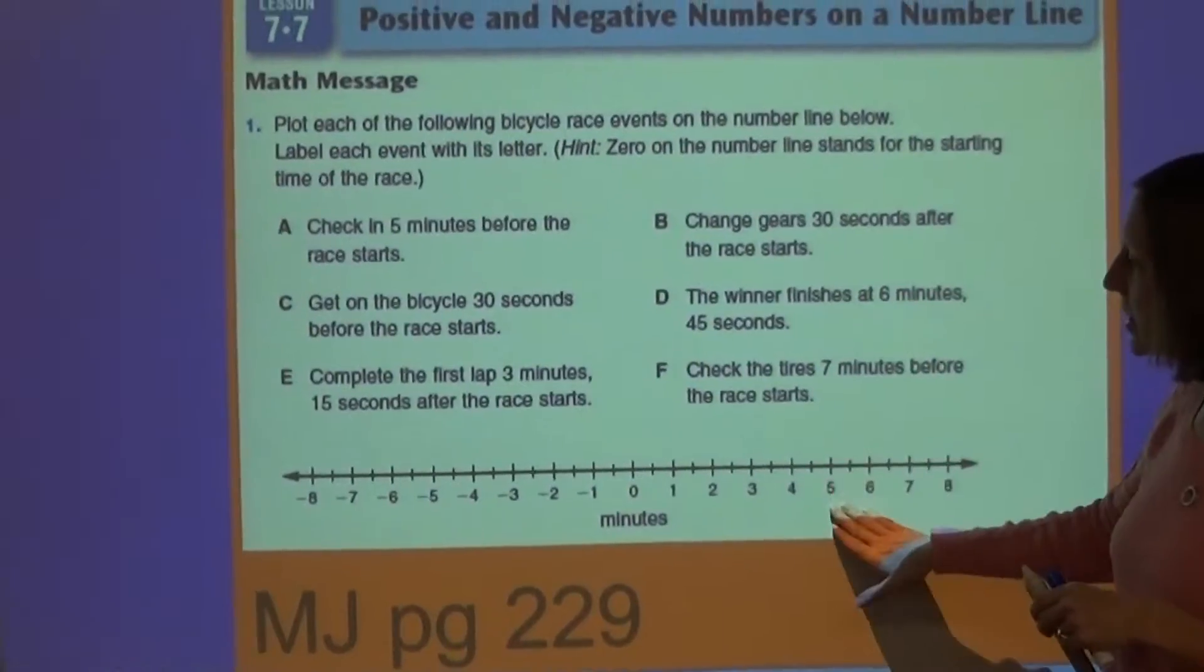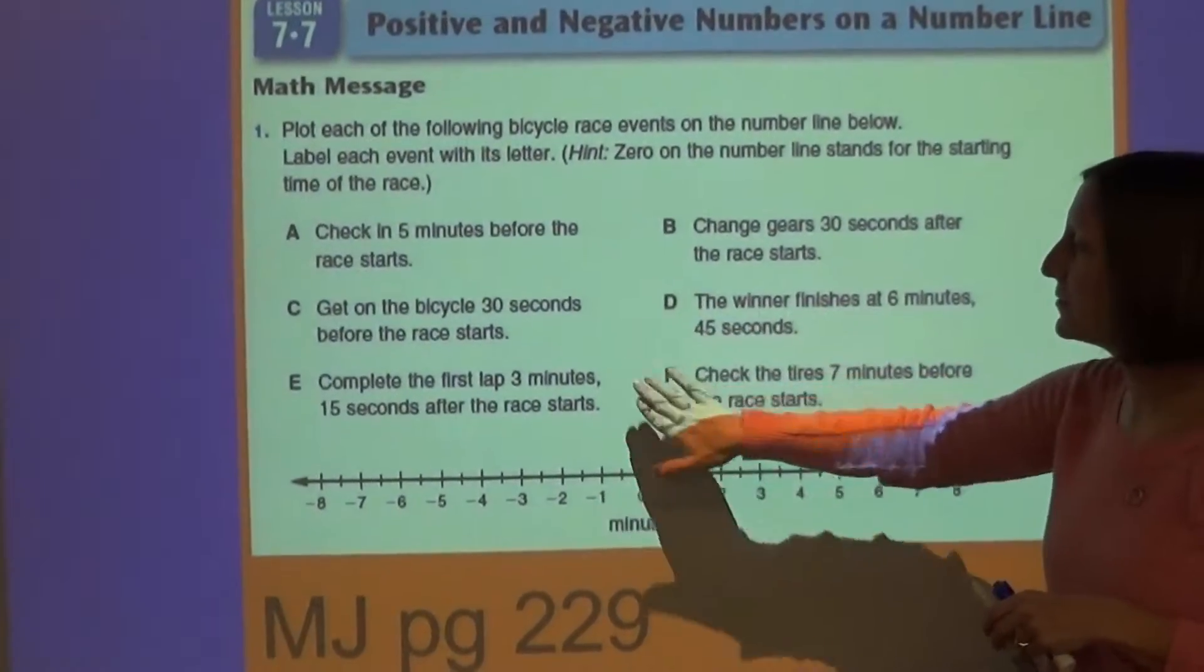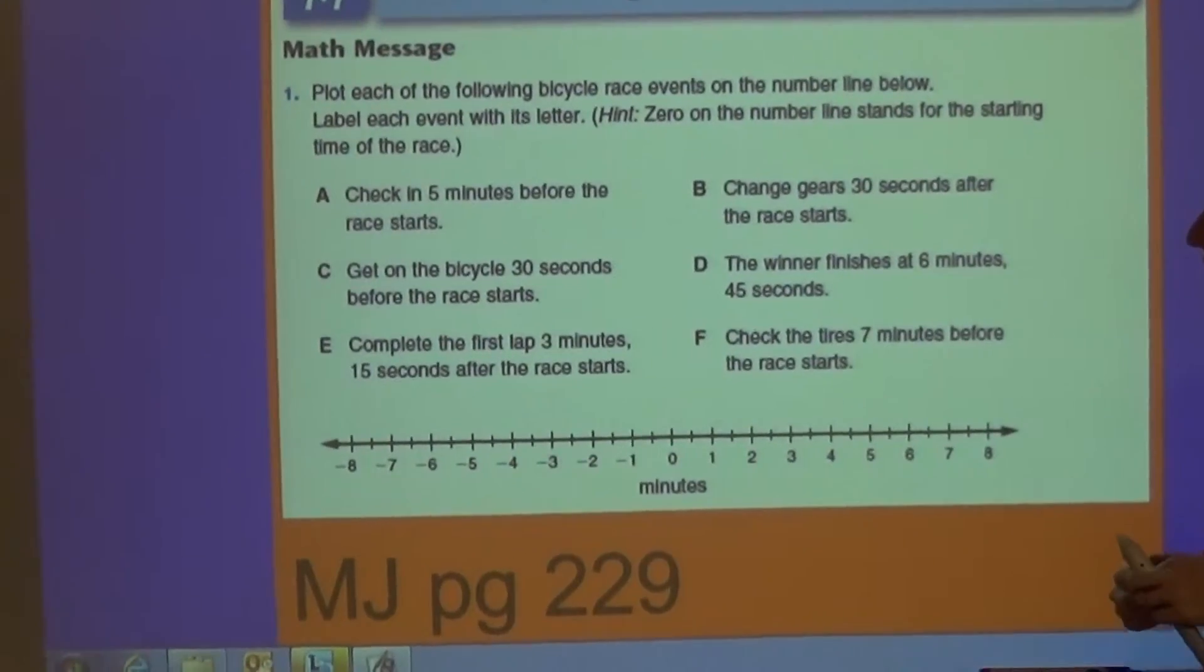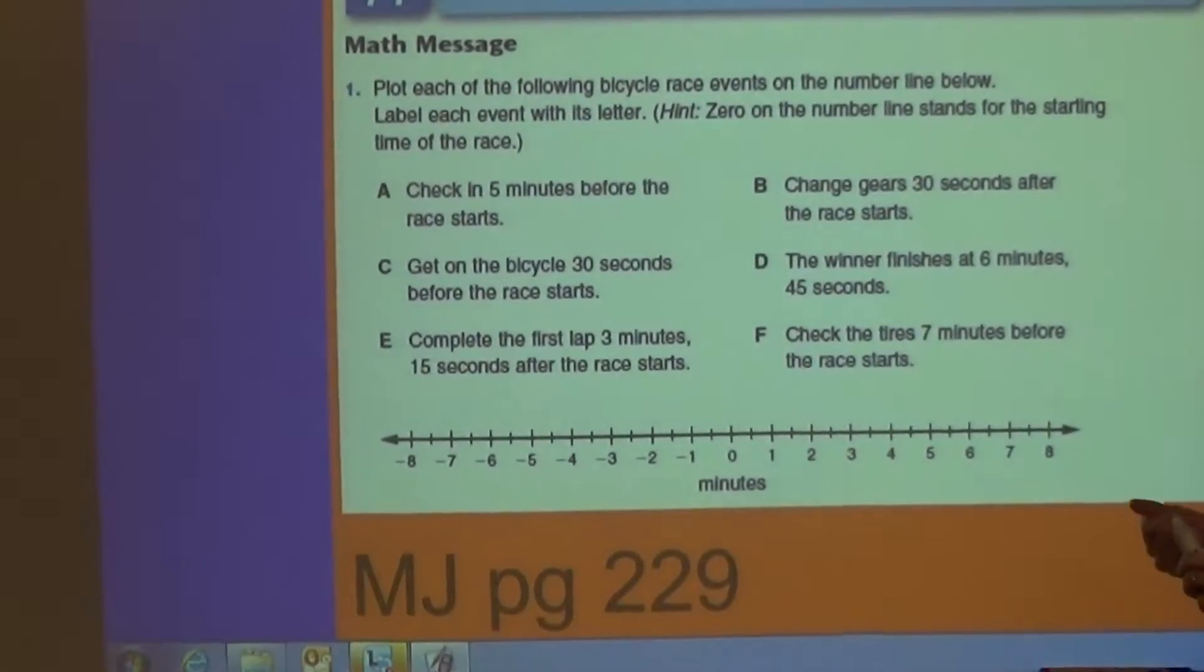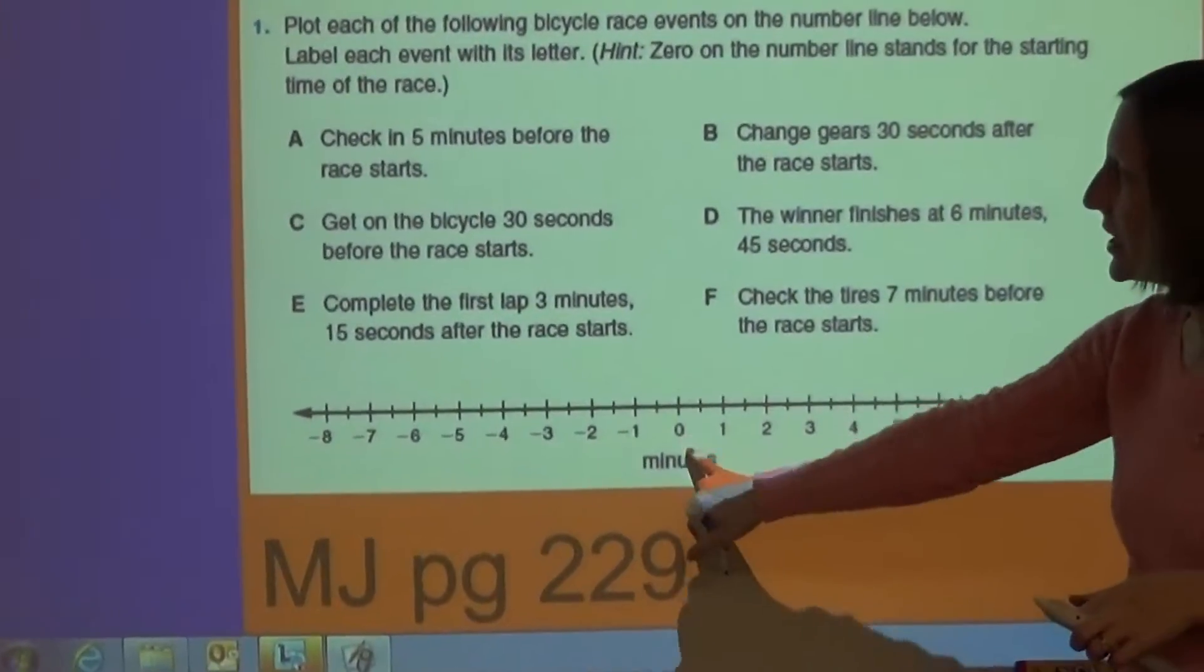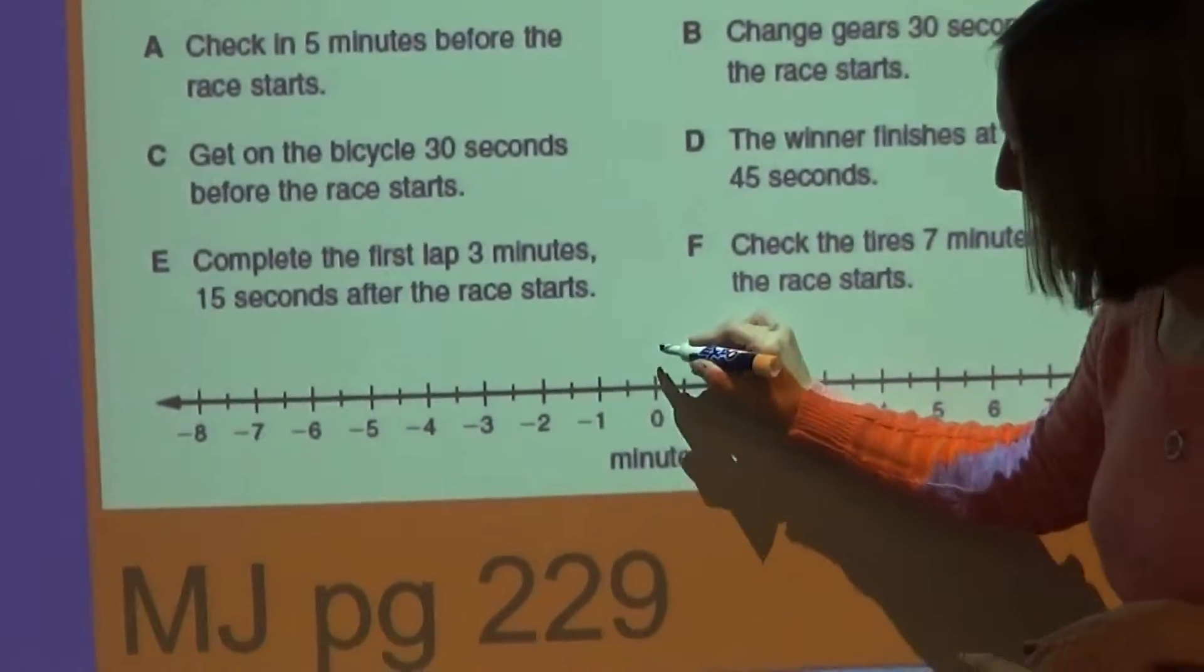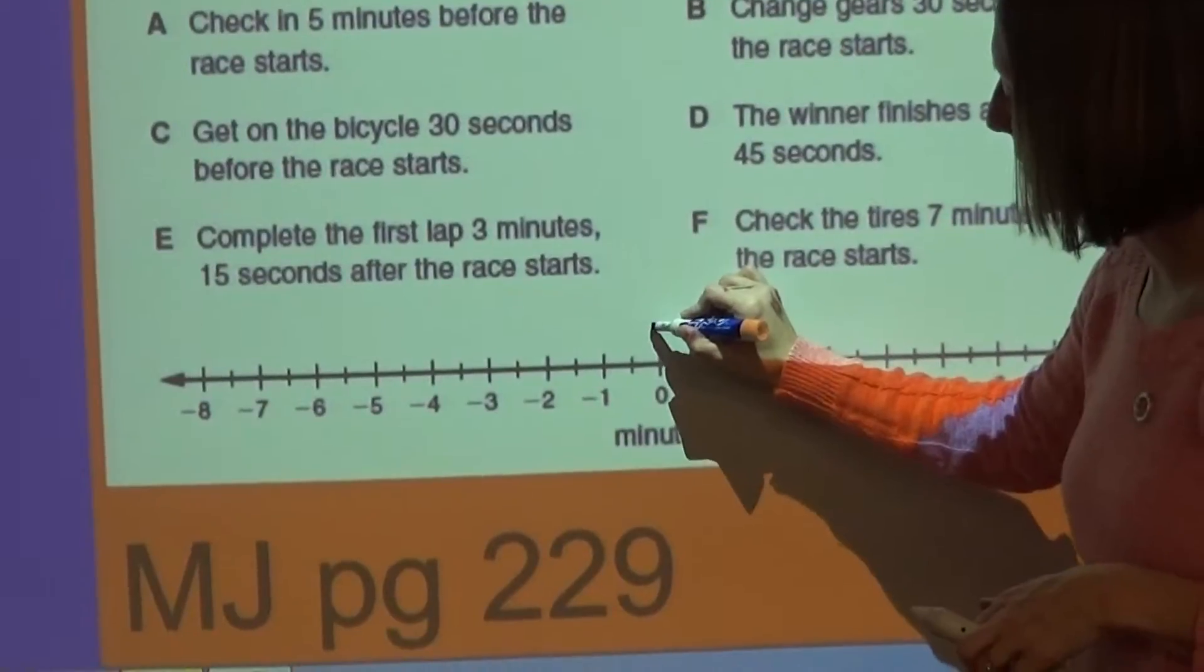You're going to be using the number line and looking at these different scenarios. So the first one says, check in 5 minutes before the race starts. So on the number line, you need to think about where that would be. Now if you read through the directions, it says, note that 0 is when the race begins.